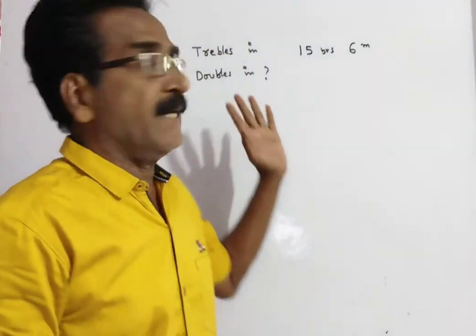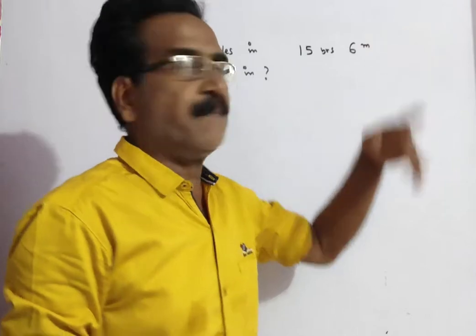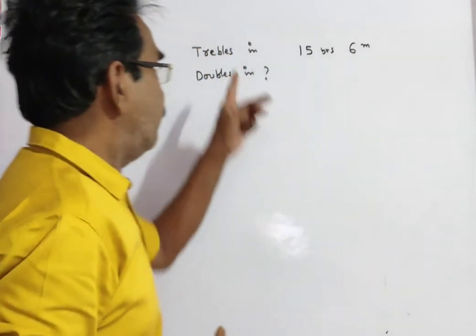See friends, a certain sum triples in 15 years, 6 months. In how many years it becomes double of itself?